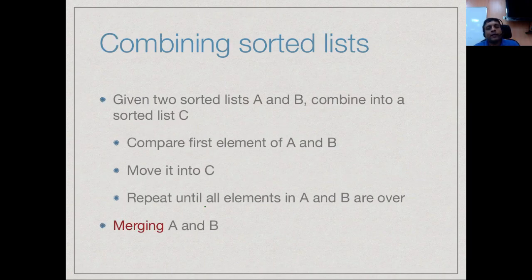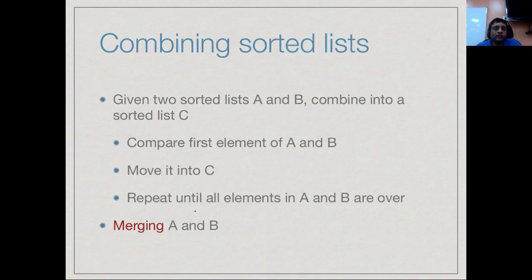Let us first look at this combining step. We are given two sorted arrays A and B and we want to combine them into a single sorted list. Suppose we had two stacks of cards, each arranged in ascending order. We look at the topmost card in each stack, take the smaller of the two and move it to a new stack, and keep doing this until all elements have been moved into a new sorted stack. This is intuitively merging.